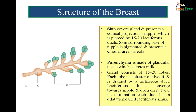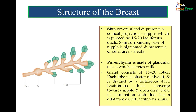Skin covers the breast all around. Parenchyma is the glandular tissue which secretes milk. The skin covering the breast shows a conical projection called the nipple, around which is the pigmented area called the areola. The glandular tissue is made up of clusters of alveoli which drain into the lactiferous duct. Fifteen to twenty lactiferous ducts pierce the nipple, and near termination each lactiferous duct shows a dilatation called the lactiferous sinus. In the figure, alveoli are marked by B, the lactiferous sinus by A, and the lactiferous duct by C.